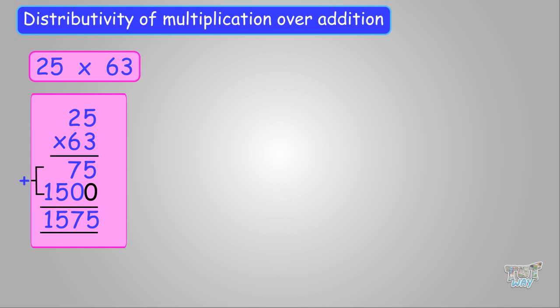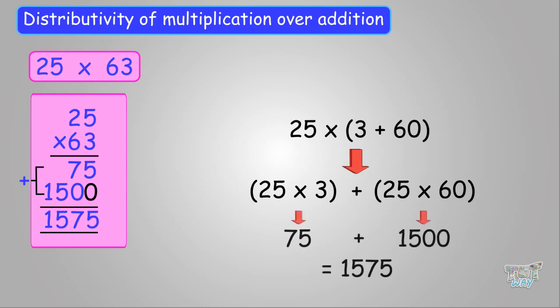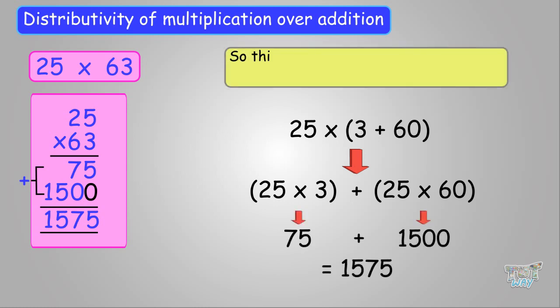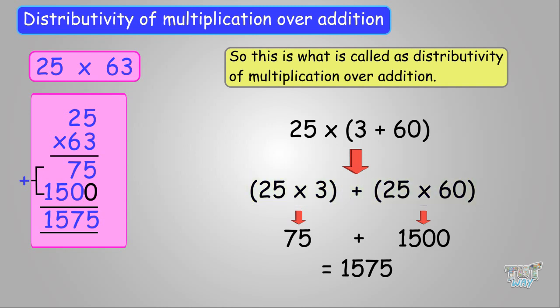So what do we do? For multiplying 25 with 3 plus 60 — as in 63 — we multiply 25 with 3 and we multiply 25 with 60, and then we add their products. So this is what is called the Distributive Property of Multiplication over Addition. Taking this example: 25 multiplied by (3 plus 60) is the same as 25 times 3 plus 25 times 60. And this is often done for our convenience.